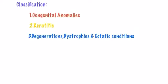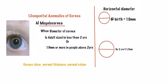Hello all, welcome to Medical ABC. Today we'll be talking about the diseases of the cornea. These can be classified into congenital anomalies, keratitis, degenerations, dystrophies, and ectatic conditions. First, we'll look at the congenital anomalies.